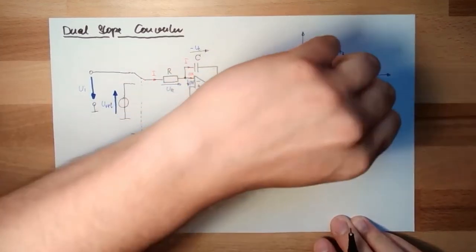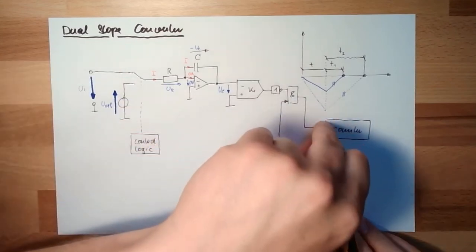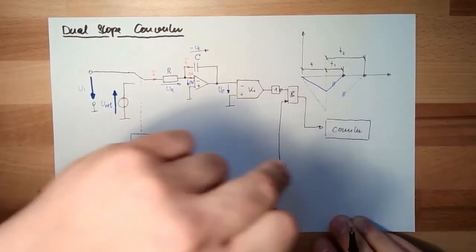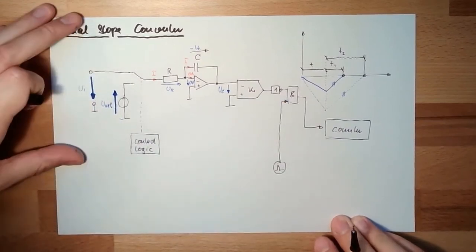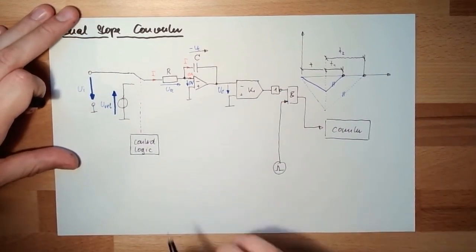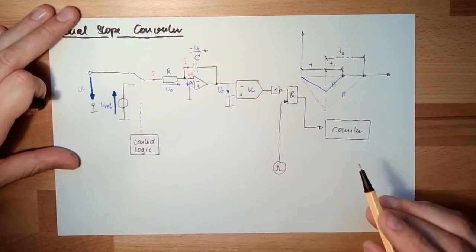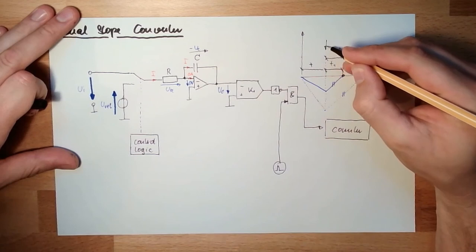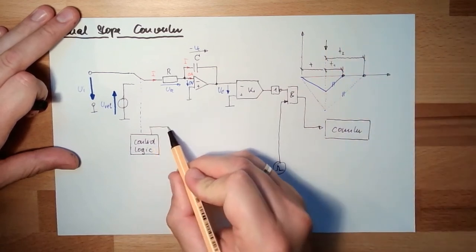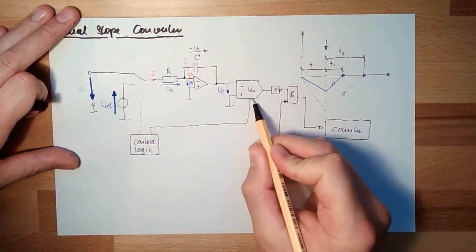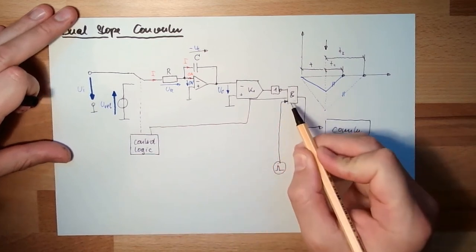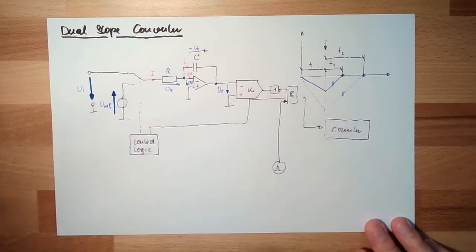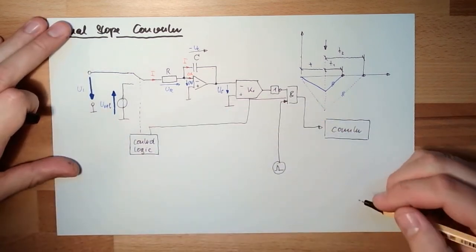And if I count long, it was a high number. Then I have a high counter value. If I count short, then it's a small number, then I have a small input value. The only thing which is still here a little bit messy is that I would start to count here. I want to start the count here. So this means I would need an output of my control logic at this end, that the control logic is telling the counter now, please count.